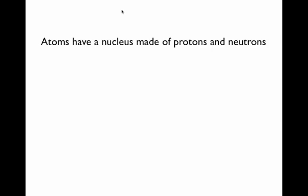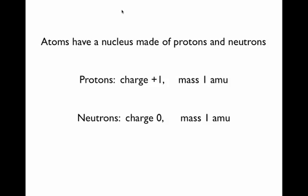As you probably know, atoms have a nucleus made up of protons and neutrons. Protons have a charge of plus one and a mass of one atomic mass unit. We'll get to that in a minute. Neutrons have zero charge and a mass of about one atomic mass unit.